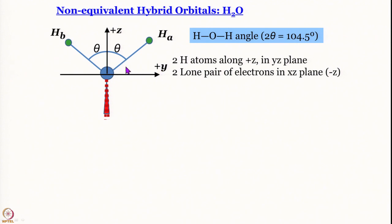The hybridization is not exactly sp³; it has to be something different. Since sp² gives 120° and sp gives 180°, as you go from sp to sp² to sp³ the bond angle decreases from 180° to 120° to 109.5°. For water the bond angle is even less than 109.5°, so the p contribution in the bonding orbitals must be a little more than 75%, while the p contribution in the lone pair orbitals must be a little less.